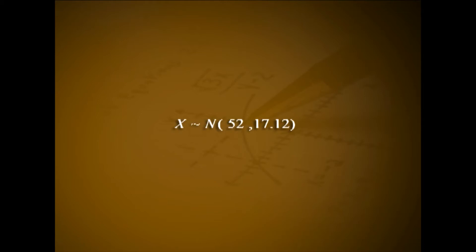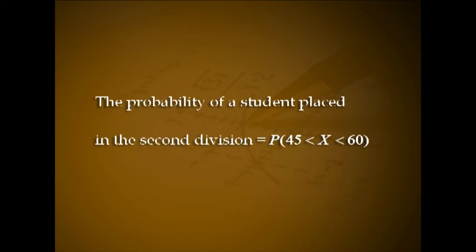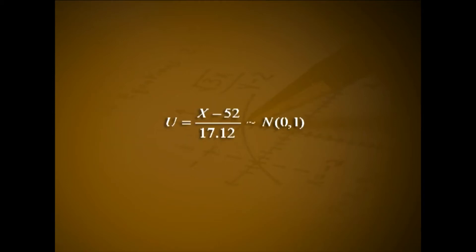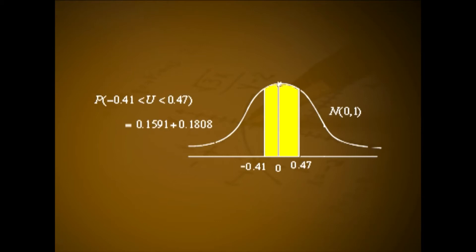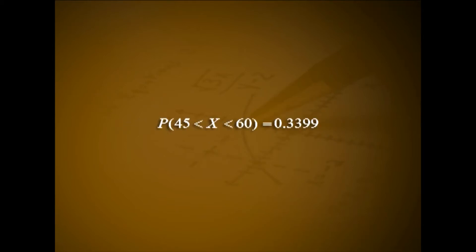The probability of a student placed in the second division = P(45 < x < 60). With u = (x - 52)/17.12 ~ N(0,1): P(45 < x < 60) = P((45-52)/17.12 < u < (60-52)/17.12) = P(-0.41 < u < 0.47) = 0.1591 + 0.1808 = 0.3399. Hence the percentage of students placed in the second division is approximately 34%.